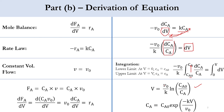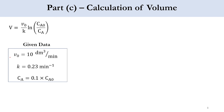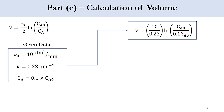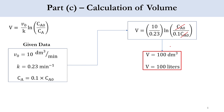Substituting the given values — V0 = 10 dm³/min, k = 0.23 min⁻¹, and CA = 0.1·CA0 — into V = (V0/k)·ln(CA0/CA): the CA0 terms cancel, giving V = (10/0.23)·ln(1/0.1) = (10/0.23)·ln(10) ≈ 100 dm³ (100 liters). So 100 liters is required to reduce the concentration of A from CA0 to 0.1·CA0 in this first-order reaction.